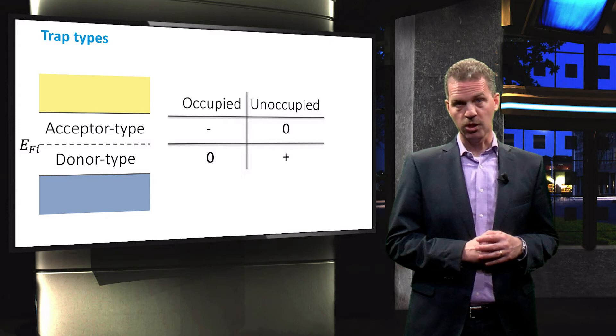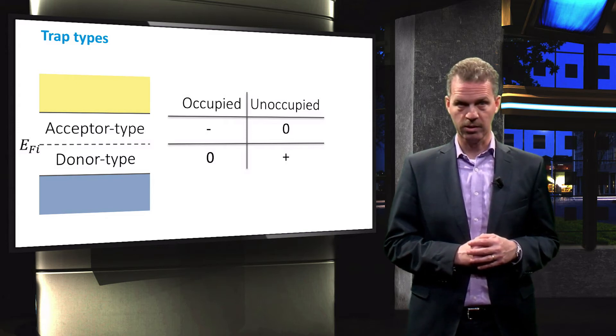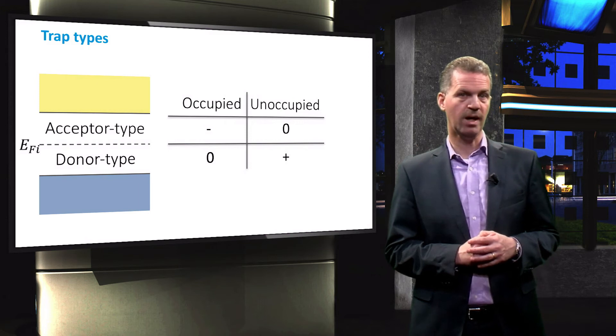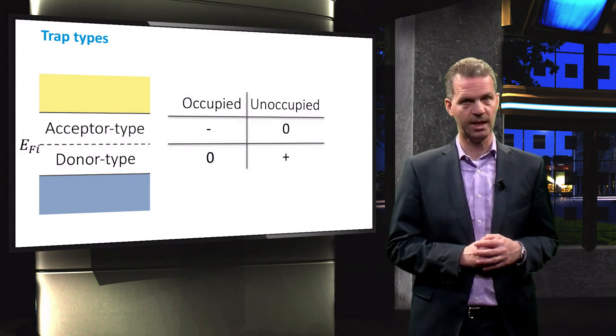The following derivation of the recombination rate is performed for donor-like traps. However, the derivation is similar for acceptor-like traps except for the charge state.